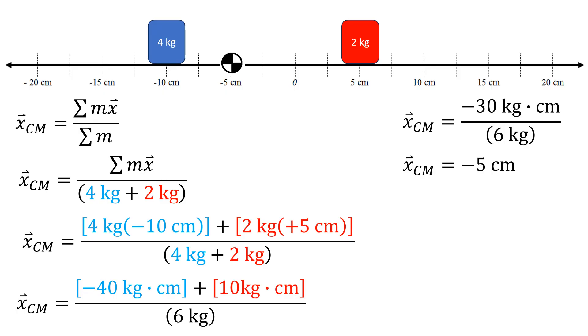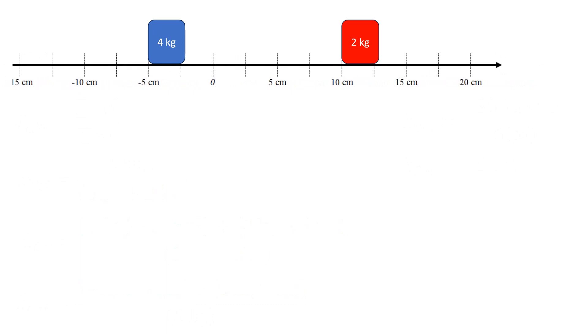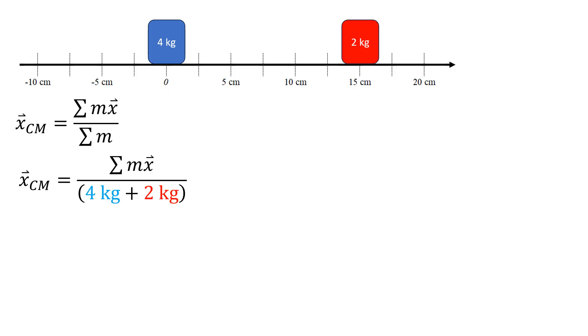The follow-up question is what if we move that number line around? What if we slid the number line so that the four kilogram object was now at zero? That would cause the other two kilogram object to be at 15 centimeters. Having not moved the objects relative to each other, all I've done is move the number line around. When I start substituting into our equation again, it doesn't change the denominator, I'm still gonna get six kilograms from the mass of the system, but it does change the numerator.